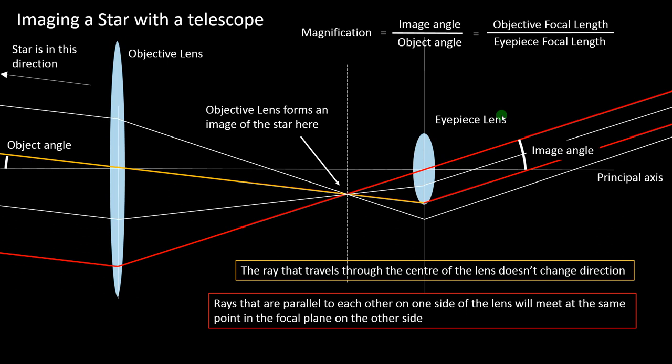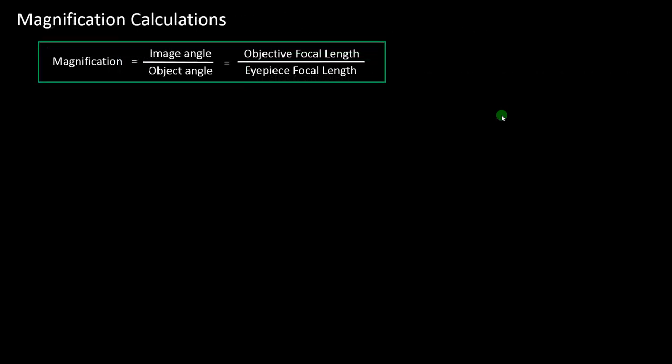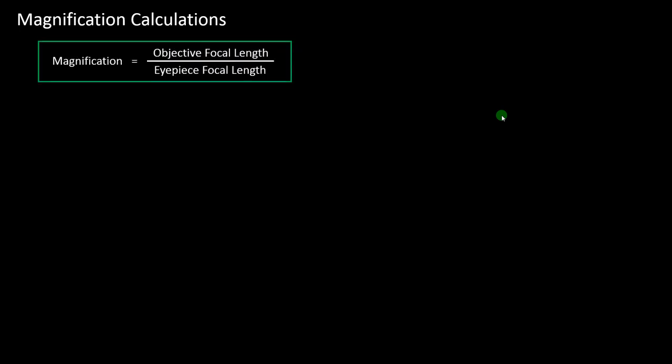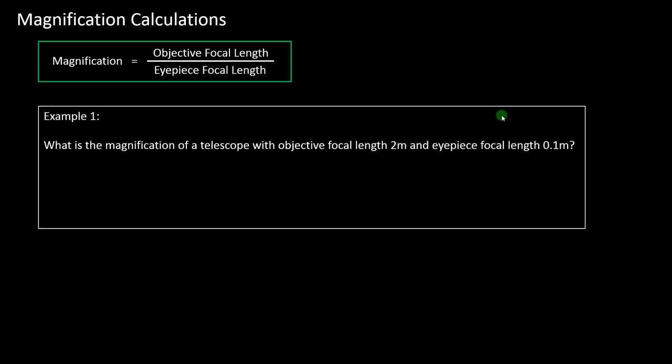So that's how the telescope works. The main thing you need to be able to do is calculations using the magnification formula. Example one: what's the magnification of a telescope with objective focal length 2 meters and eyepiece focal length 0.1 meters? Pause and try it if you'd like.